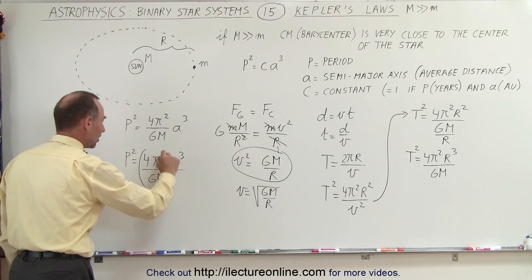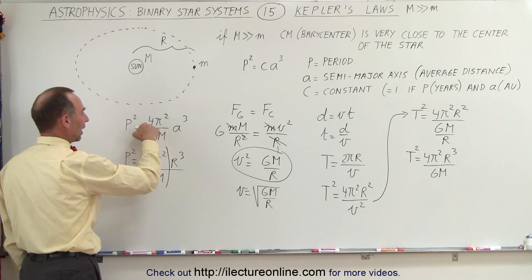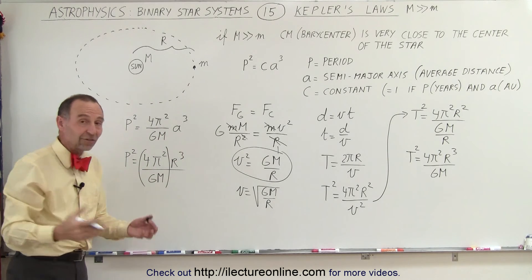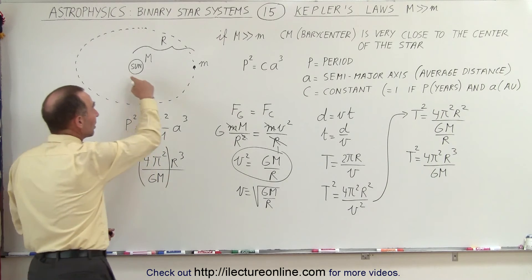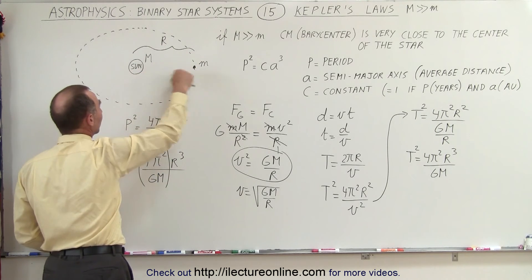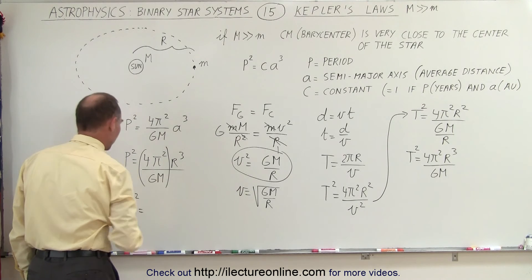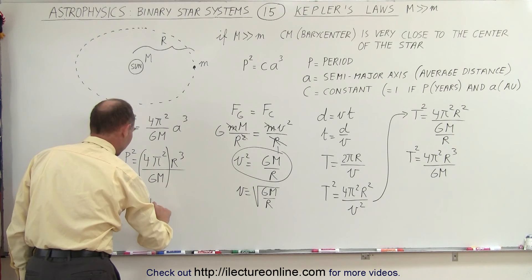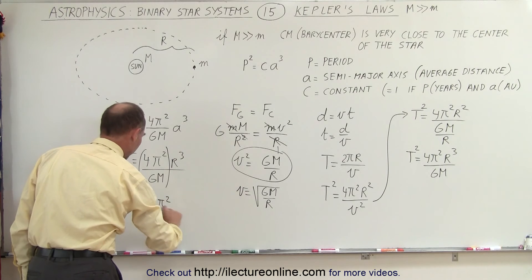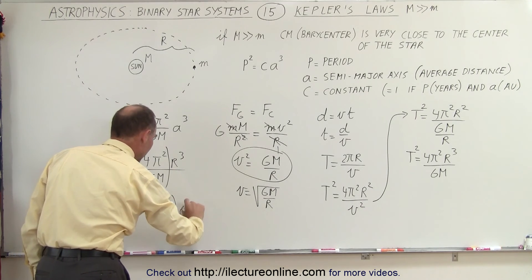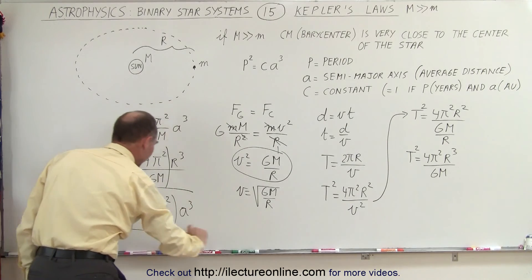And notice that this constant here is exactly the same as what I had over there. And instead of a, I have an r³. But that's essentially the same thing. r was the average distance between the planet and the sun. So in other words, Kepler's law comes to the same equation that P² times this constant 4π²/(GM) times a³ is what he found it to be.